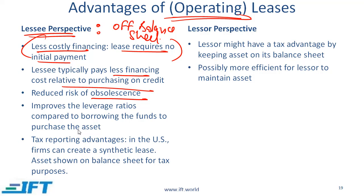Since we are doing off-balance-sheet financing, your leverage ratios will be better with operating leases. Additionally, in some countries what you can do is show a leased asset as an asset on your tax reporting side but show an operating lease on the financial reporting side. When this happens you have a synthetic lease. The advantage is that through depreciation you can reduce your taxes. All these items were from the lessee perspective.